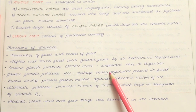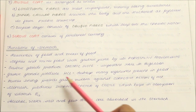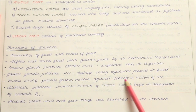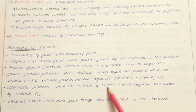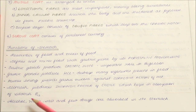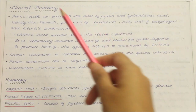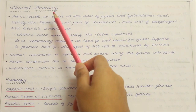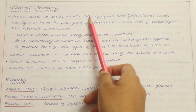Gastric glands produce hydrochloric acid which destroys many organisms present in food. The mucus lining protects the gastric mucosa against the corrosive action of HCl. The stomach produces intrinsic factor of Castle, which helps in absorption of vitamin B12. Alcohol, water, salts, and a few drugs are also absorbed in the stomach.